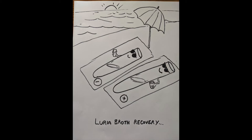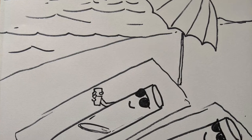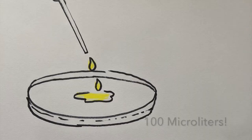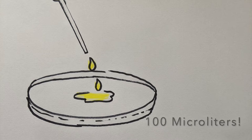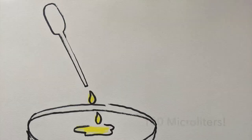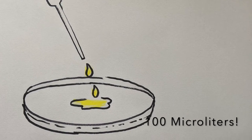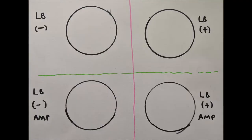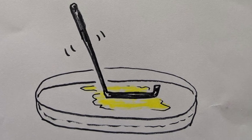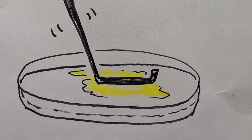That recovery time is kind of like: imagine if you fell in a frozen pond and someone rescued you — the first thing they'd do is get a blanket on you, get you home, and give you some soup. These bacteria have been fighting for their lives and now we're giving them nutrition. Once they've recovered, we plate them — taking a known quantity from the minus test tube and spreading it on the minus plate and minus AMP plate, and from the plus test tube on the plus plate and plus AMP plate, using a sterilized lazy-L spreader. We cap and incubate overnight.